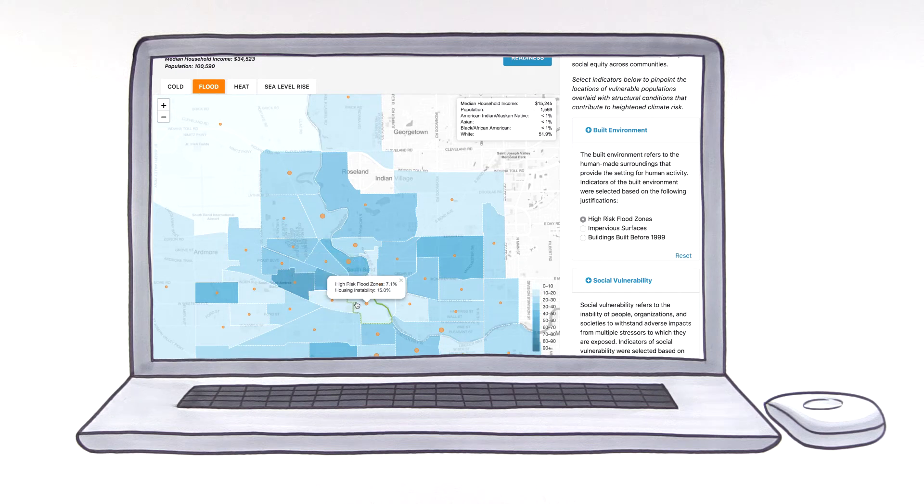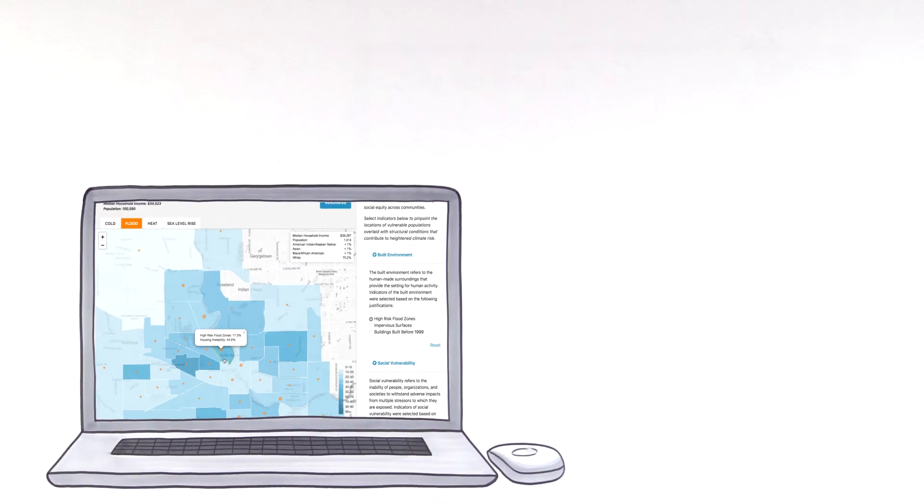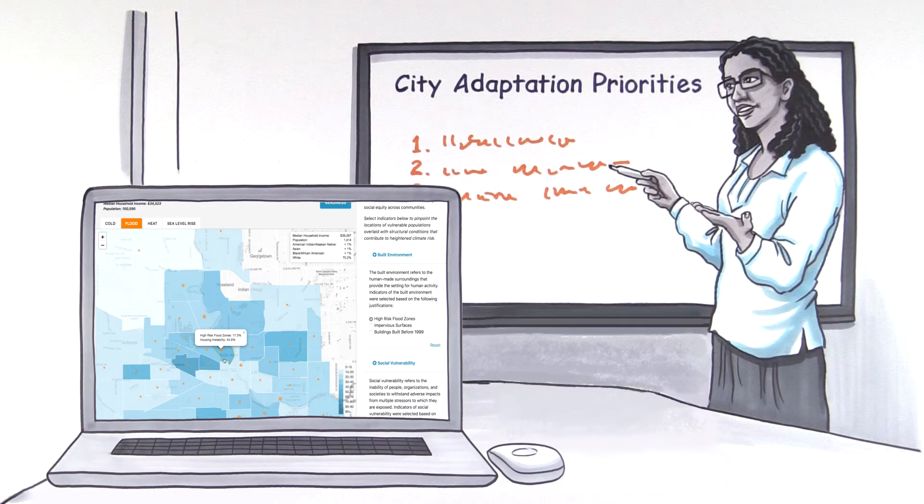Through visualization, you can observe where vulnerable populations overlap with high-risk flood zones. With this information, you can create a compelling case for funding an initiative that prioritizes the most vulnerable and saves money and resources long-term.